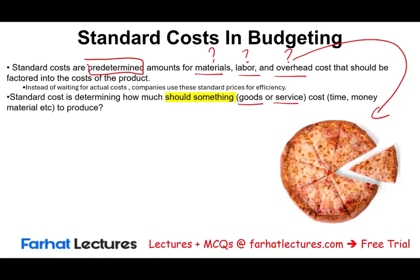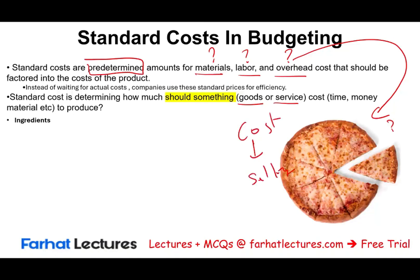Standard costs are essential for planning. For example, if a restaurant is selling pizzas, they would need to know how much it should cost them to make a pizza. For one thing, they need to know how much it should cost so they can determine the selling price. But we're going to see what else standard costs can be used for.